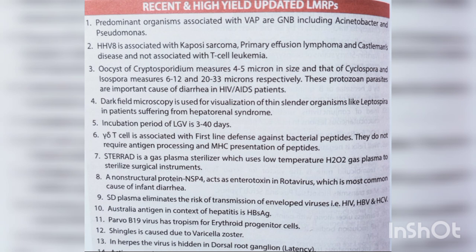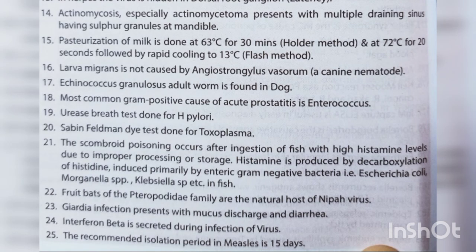In herpes, the virus is hidden in the dorsal root ganglion in latency. Actinomycosis, especially actinomycetoma, presents with multiple draining sinuses having sulfur granules at the mandible. Pasteurization of milk is done at 63°C for 30 minutes (holder's method) and at 72°C for 20 seconds followed by rapid cooling to 13°C (flash method).